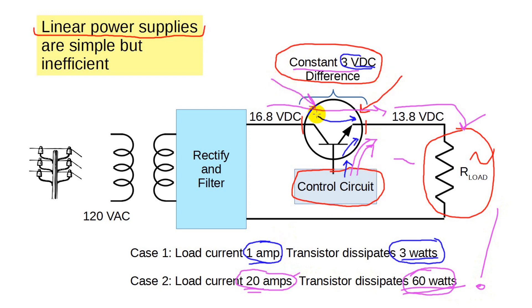So even though the linear power supply is conceptually simple, in fact, it's quite inefficient. Oh, and the power transformer secondary has to handle the entire 20 amps. So that means thick wire, which makes for a big, expensive, and I might add heavy transformer.